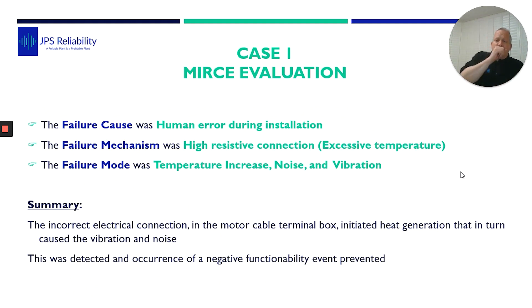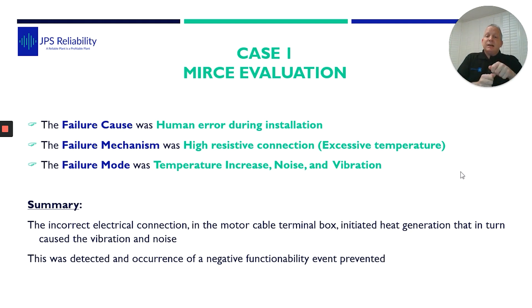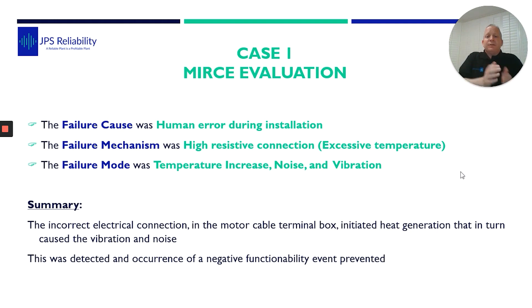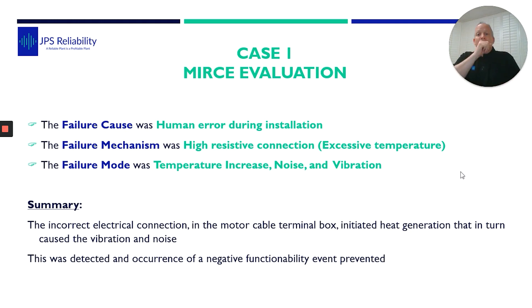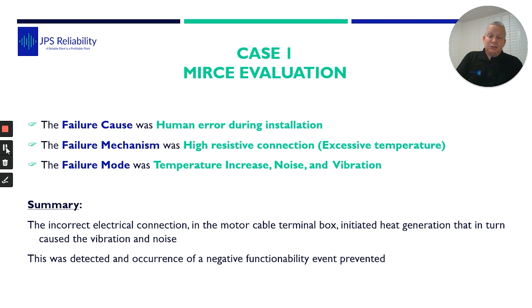So when we stood back and tried to work out what actually happened, we asked: what was the failure cause? Well, three-month-old motor, experienced electrician — unfortunately couldn't have done the connection up to the correct torque. So the failure cause was human error during installation. The failure mechanism was high resistance connection: as those plates were loose and molecules starting to move, generating friction — that's high resistance connection, increasing the temperature. And the mode was temperature increase, noise, and vibration. So the summary is: an incorrect electrical connection — human error — in the motor cable terminal box initiated heat generation, which in turn caused vibration, noise, and the motor to run really badly.